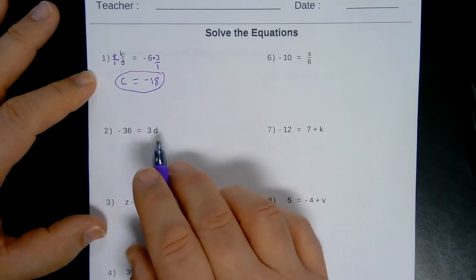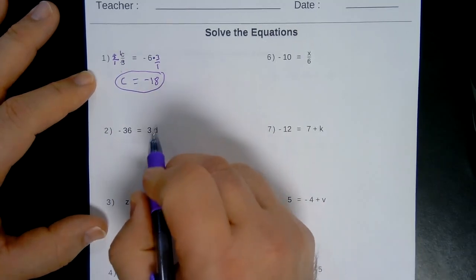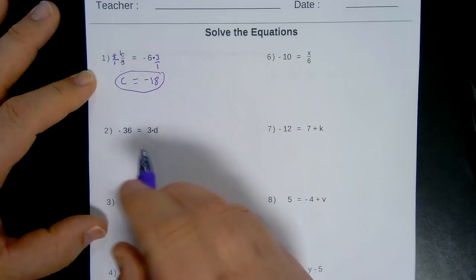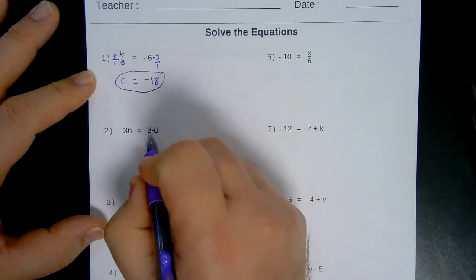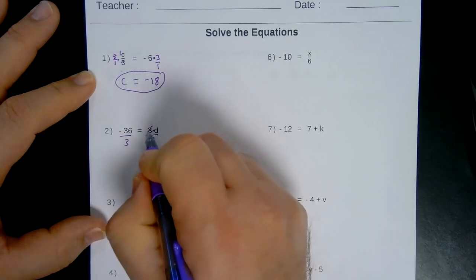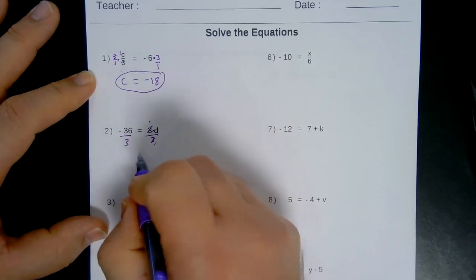Number 2, this is a traditional one that a lot of you see sometimes. 3D, this means 3 times D. The opposite of multiplication is division. Divide both sides by 3. Okay, my 3's will cancel, leaving me little 1's behind.